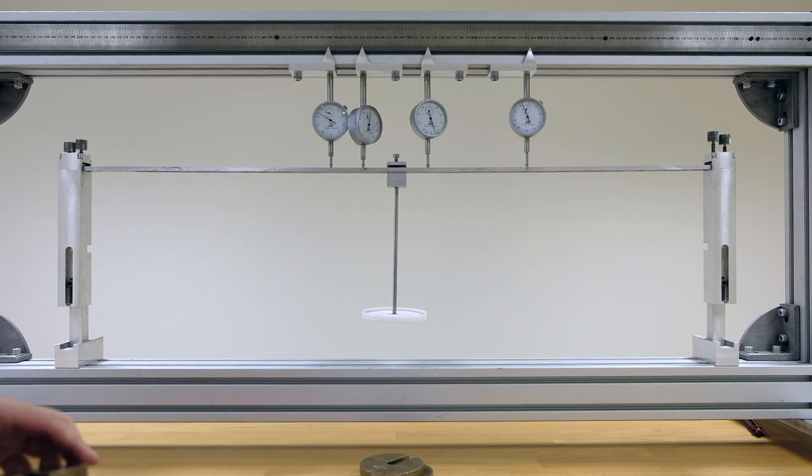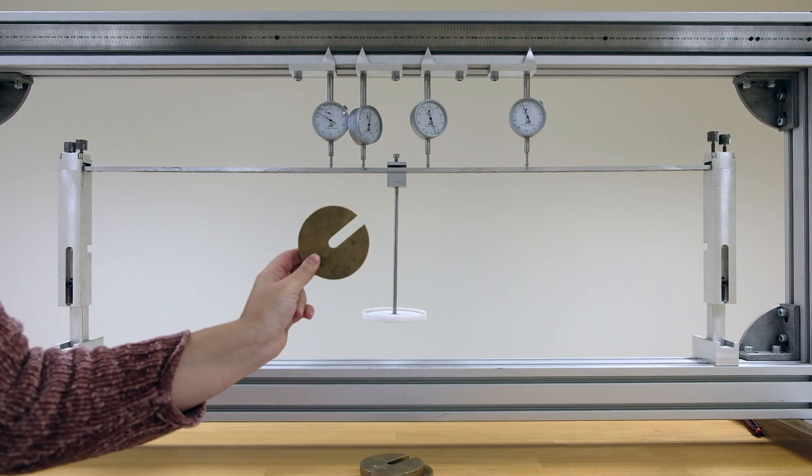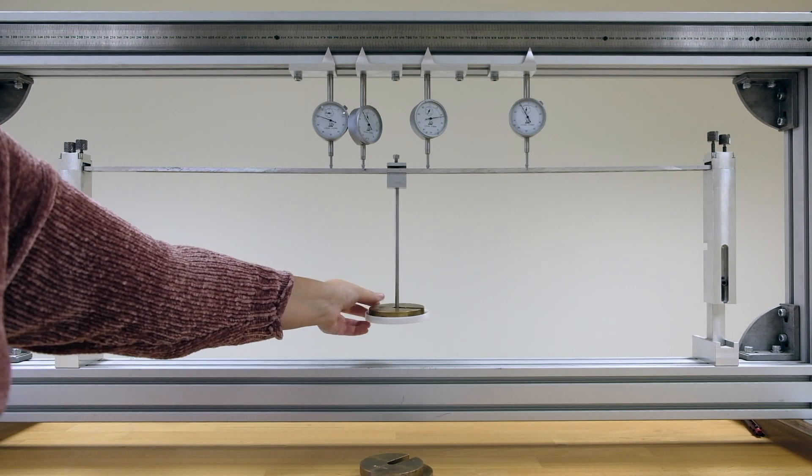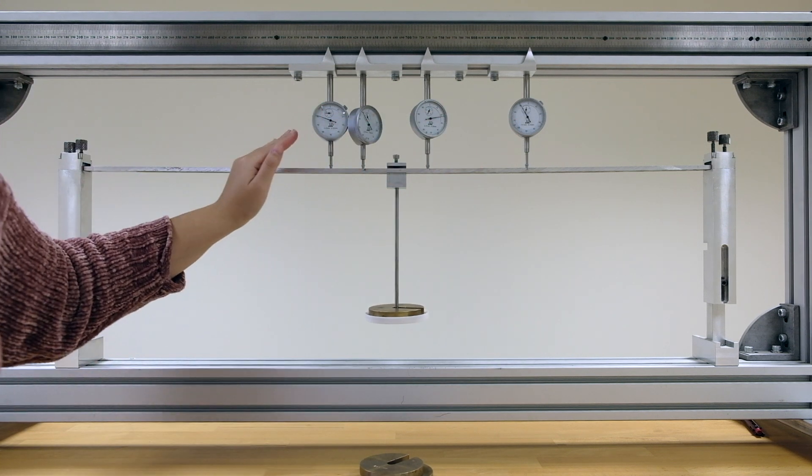Now, we can actually start our loading. You will have three 500g loads, and you will apply them gradually. You will place your load like this, one by one, and then you will get the readings from here.